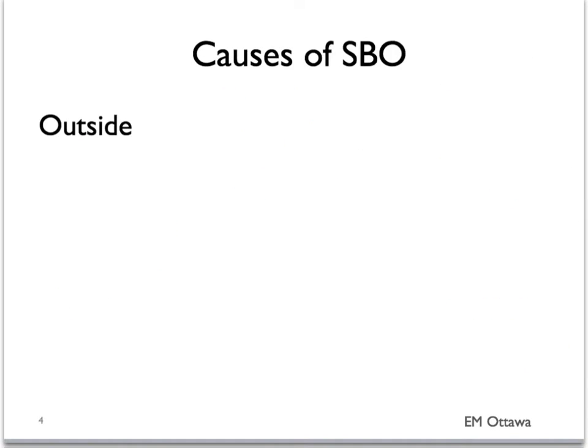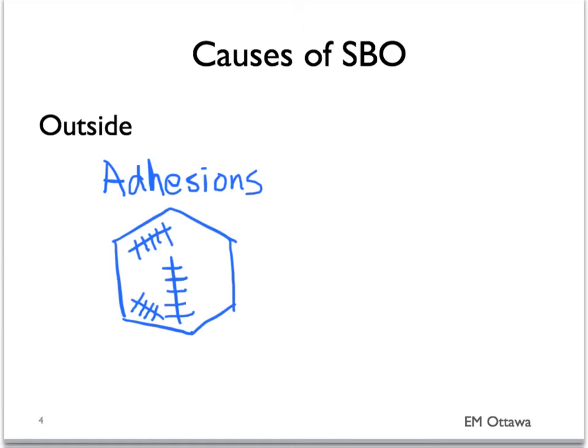What causes small bowel obstruction? It can be something on the outside of the bowel or something inside the bowel. On the outside, anything that causes scar tissues or adhesions in the peritoneum can cause bowel obstruction. It happens when the bowel is being caught up in the adhesions. Adhesions are caused by previous surgery. This is the main cause of small bowel obstruction.